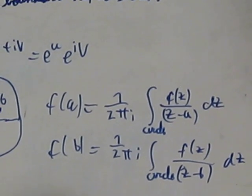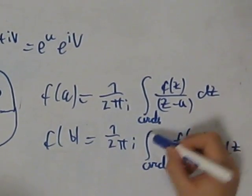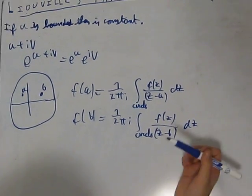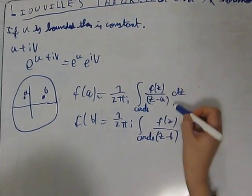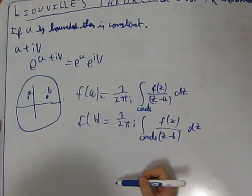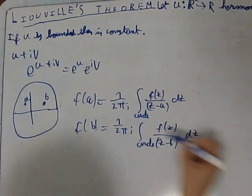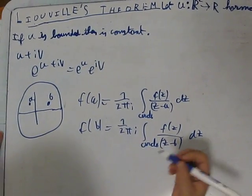First, we want to prove this, it's equal to this. It's the same as proving this minus this is zero. But this minus this is the same as...